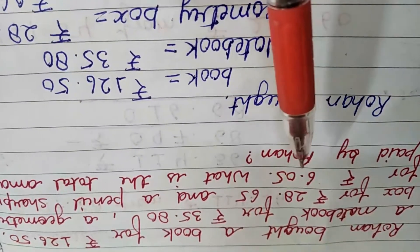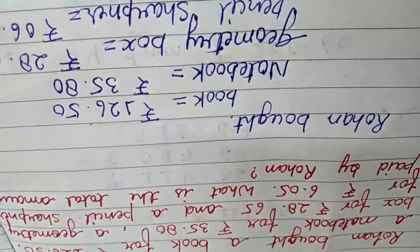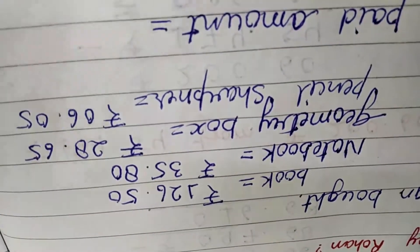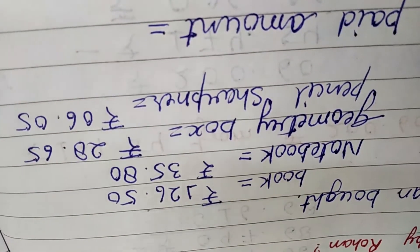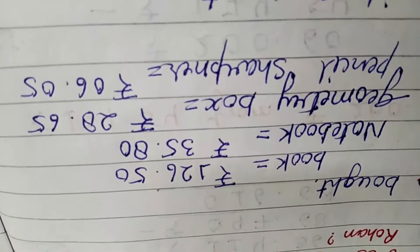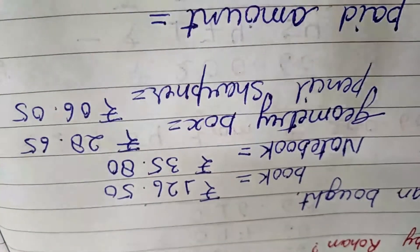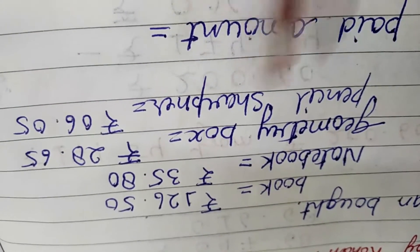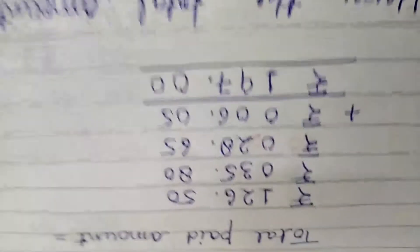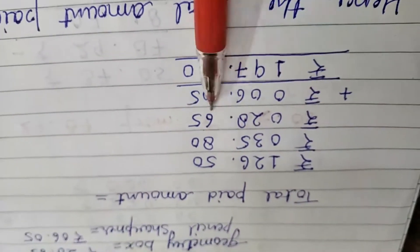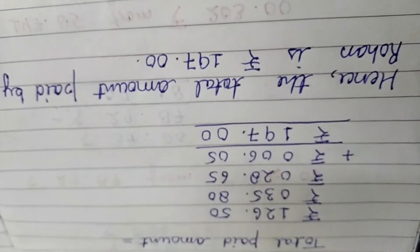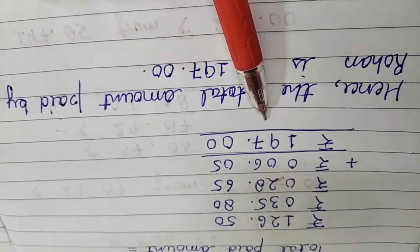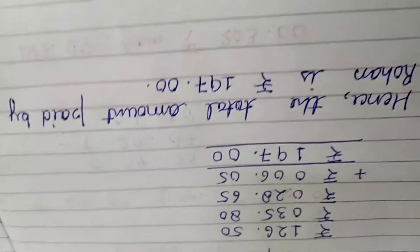Next word problem: Rohan bought a book for Rs. 126.50, a notebook for Rs. 35.80, a geometry box for Rs. 28.65, and a pencil sharpener for Rs. 6.05. We have to find the total amount paid by Rohan. We add all the amounts in columns and get the total amount paid by Rohan.